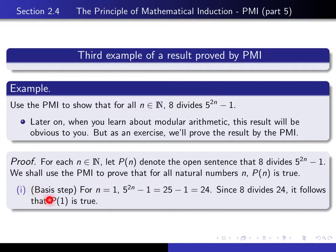Then we have the basis step, in which we verify that P(1) is true. So how do I write that down? In a good sentence, I say for n equal to 1, 5 to the 2n minus 1 is 5 squared minus 1, 25 minus 1 is 24. And since 8 divides 24, it follows that P(1) is true. That concludes the basis step.